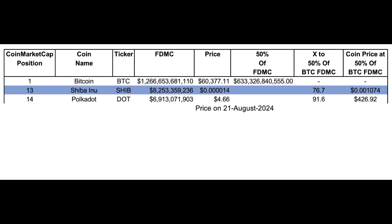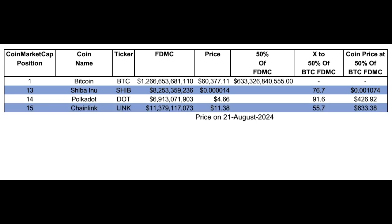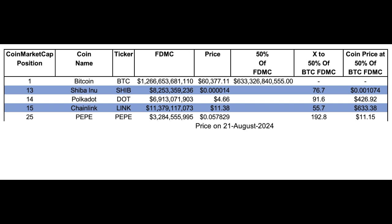Chainlink at position 15 is a very popular altcoin. It has a slightly higher fully diluted market cap than the other two, so my max target according to these calculations is 55x. Pepe, the first major meme coin, could potentially be 192x — but keep in mind it's still a meme coin, and reaching 50% of Bitcoin's fully diluted market cap is a very challenging target. So if someone tells you Pepe could go 500x or 1000x, that's never going to happen.